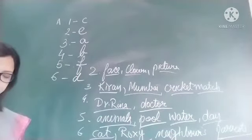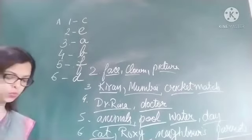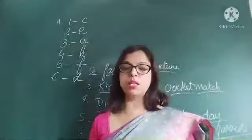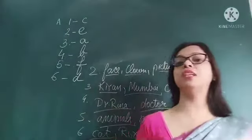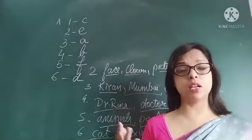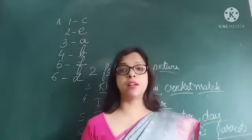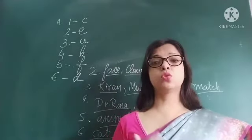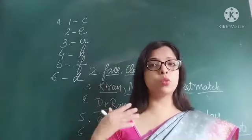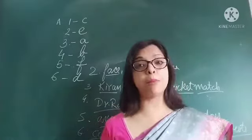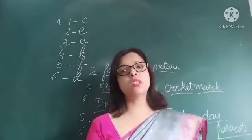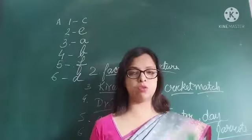Next we come to abstract nouns. Abstract nouns are usually the names of qualities, feelings, or ideas. You cannot touch or see them — you can only feel them. For example: sweetness, happiness, sadness — you can only feel these. So they are all abstract nouns.